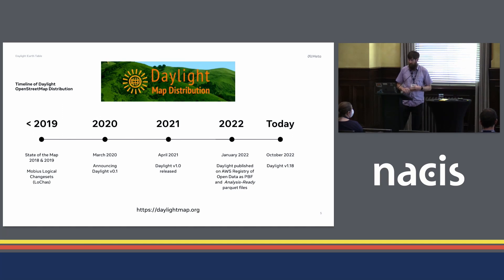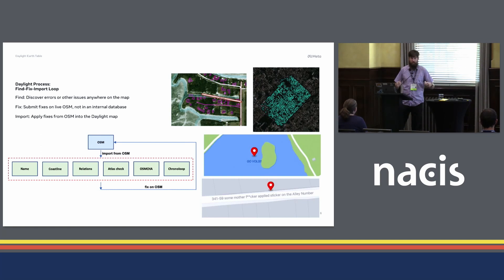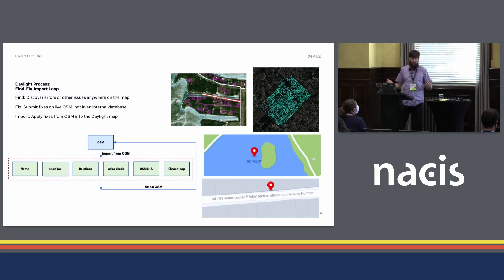We release on a four-week schedule and this is what the Daylight process looks like. We take OSM each month and run a series of quality control checks on it. We look at names — have names changed? Coastline integrity is really important to us because when you break the coastline and try to render that, you find huge chunks of land that end up underwater. Relation integrity, other tools such as Atlas checks and OSM-CHA — we run all these and identify errors in the map, then we have a four-week sprint where we go back and actually fix all of these errors.